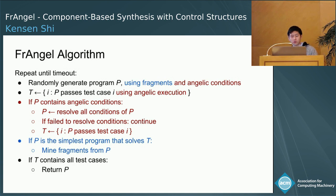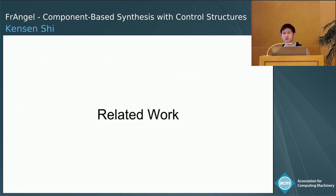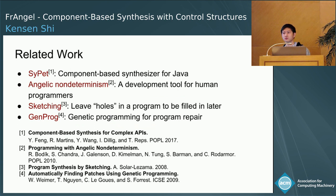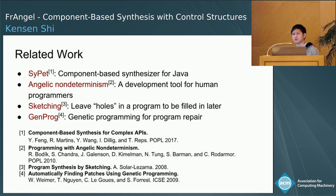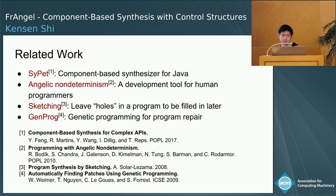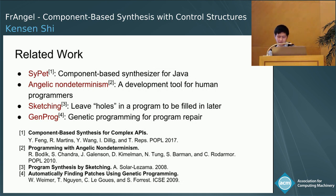Now let's discuss some related work. I've already mentioned CyPet, which is another component-based synthesizer for Java that uses constraint solving, while Frangel uses a random search with heuristics. Angelic conditions have been described previously, but they were used in the context of a development tool; we use them here for synthesis. Angelic conditions are also similar to sketching, a popular technique where we leave holes in a program to be filled in later. Frangel's strategy of mining fragments is also similar to genetic programming, which has been used previously for program repair.